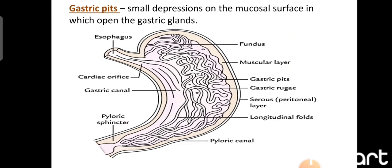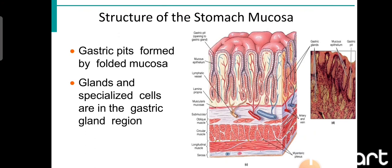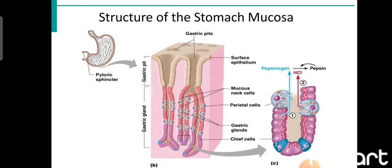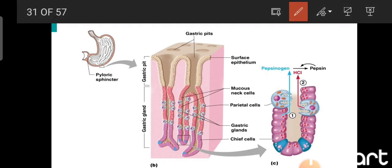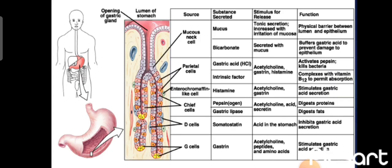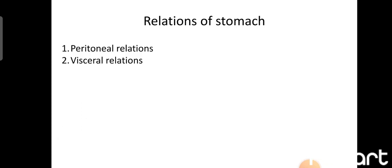Gastric pits are small depressions on the mucosal surface where the gastric glands open. They are formed by folded mucosa, especially the epithelial layer. The gastric gland is formed by invagination of the epithelial layer of the mucosa into the lamina propria and deeper layers. The gastric gland contains parietal cells which secrete HCl, chief cells which are deeply located and secrete pepsinogen, and mucus neck cells at the top which secrete mucus.